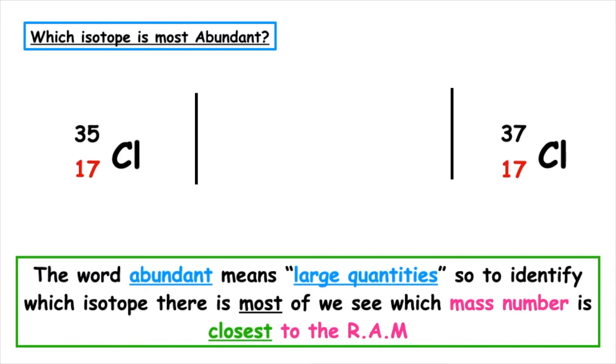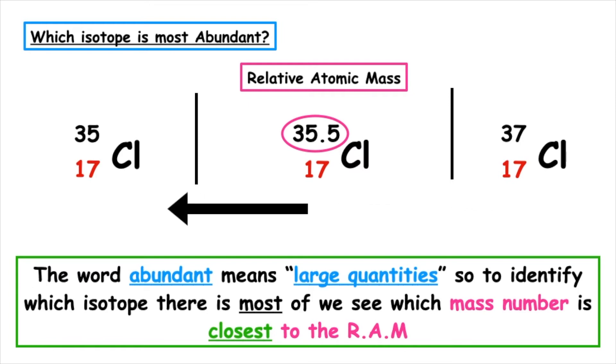When we look up the data booklet, we can see that the relative atomic mass of chlorine is 35.5. Which number is 35.5 closest to? It's closest to chlorine 35, so therefore this isotope is the most abundant, meaning we've got more of this type.